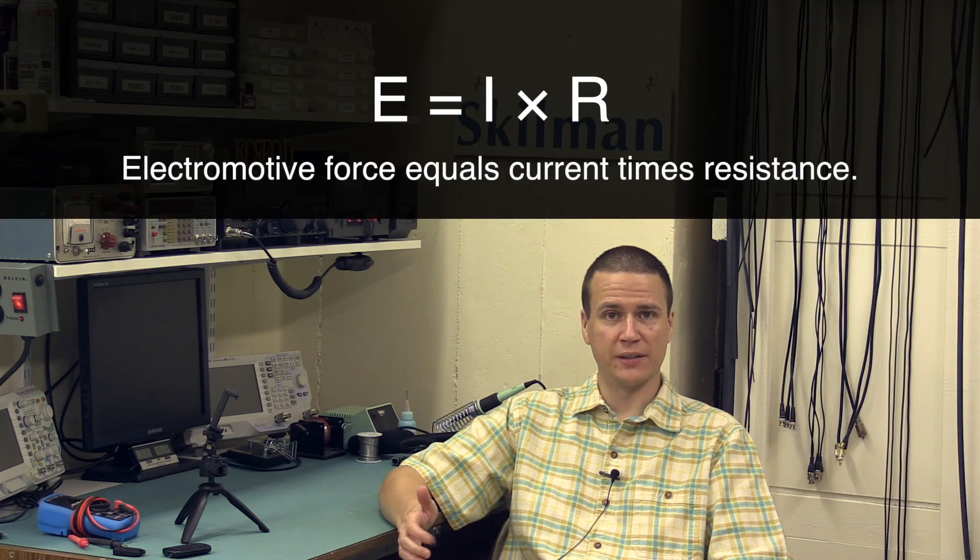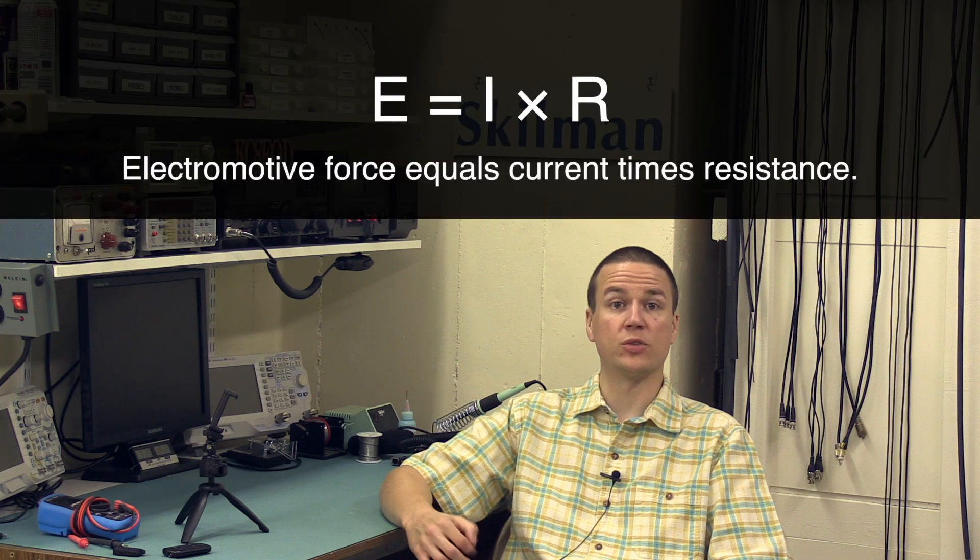This brings us to Ohm's law, which states that voltage equals current times resistance. We usually write voltage as V, but on the technician class ham radio test, they talk about it as electromotive force and write it as E. So, we'll do that here. Current, we write as I, and resistance as R. So, we get the equation E equals I times R.